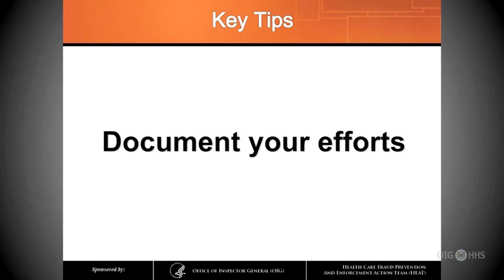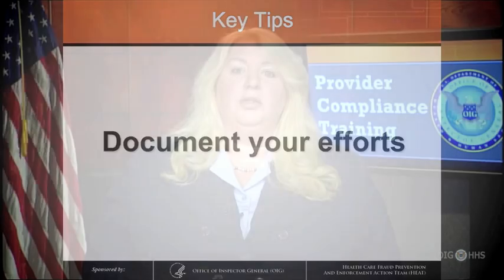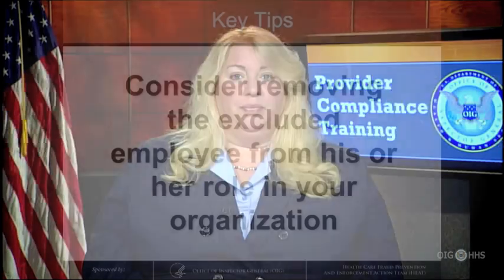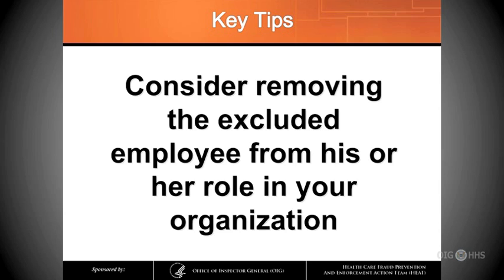That's because the Privacy Act prohibits us from including Social Security numbers in the downloadable data file. Fifth, document your efforts. If there is ever a problem, you may need to prove to us that you properly screened someone — and it is easy for us to tell if you haven't. If you do find out that an employee is excluded, consider removing that employee from his or her role in your organization. Also, consider whether you should initiate bill holds or disclose the matter to the OIG through the OIG's self-disclosure protocol, which is the subject of a separate podcast.